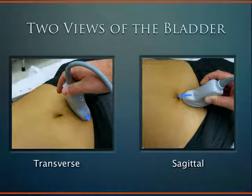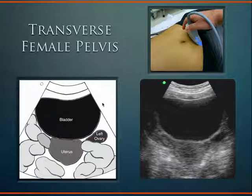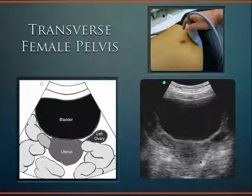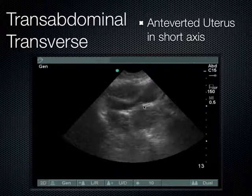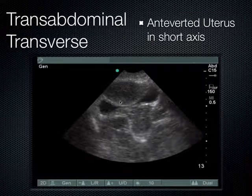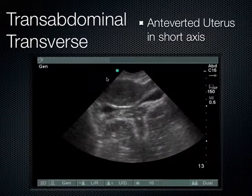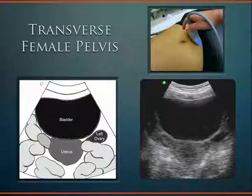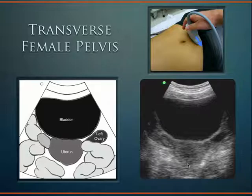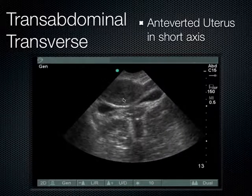For bladder scanning, in a transverse view the indicator goes to the patient's right; in a sagittal view towards the patient's head. In the female pelvis, a distended bladder pushes the uterus posteriorly. When the bladder is rather empty, the uterus is anteverted and comes on top of the bladder — the vaginal stripe is visible, and the fundus of the uterus appears to come back at you. This can look a little funny the first time you see it with an empty bladder.